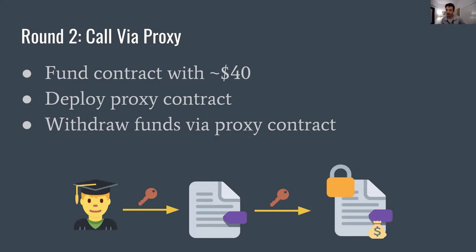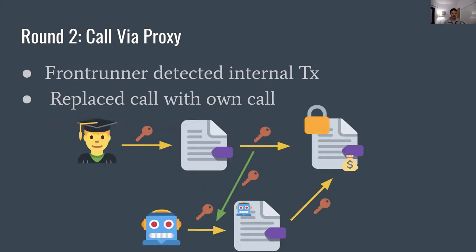The second attempt was designed to make life a little bit harder for the front-runners. We set up a proxy — basically another contract we would use to call our contract that has the funds — and put in a slightly higher amount of ETH to make it more lucrative. Interestingly, in this case, we were also front-run. Unlike the previous case which was a direct call, this time the bot was actually able to figure out which contract has the funds, look into an internal call that moves these funds, intercept that specific internal call to our contract, and again call their own proxy contract to extract the funds.